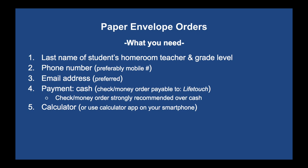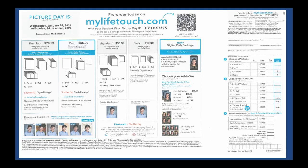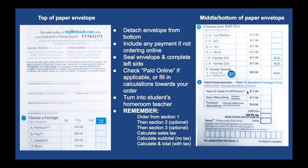Have a calculator or use your smartphone's calculator app for calculating the tax. Here's an example of the paper envelope order — it's going to look like this. Make sure you have the right picture day and the correct date. The picture day ID is at the top. On the right is the envelope portion that you tear off, and on the left are all the items you can order. We'll zoom in to show you the top, middle, and end.